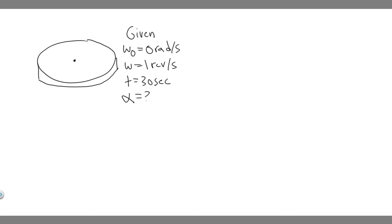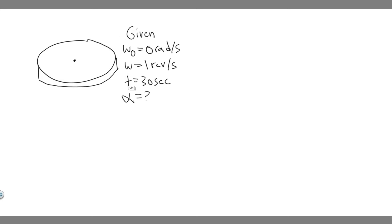The way we're going to solve this is by using rotational kinematic equations, which are basically just the normal kinematic equations with rotational variables. Think about this as V sub zero, V, T, and A — they just correlate. So omega is angular velocity, T is just time, and alpha is angular acceleration.